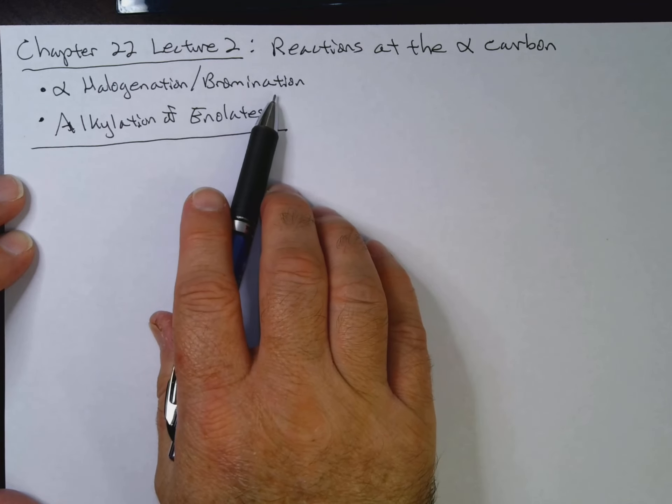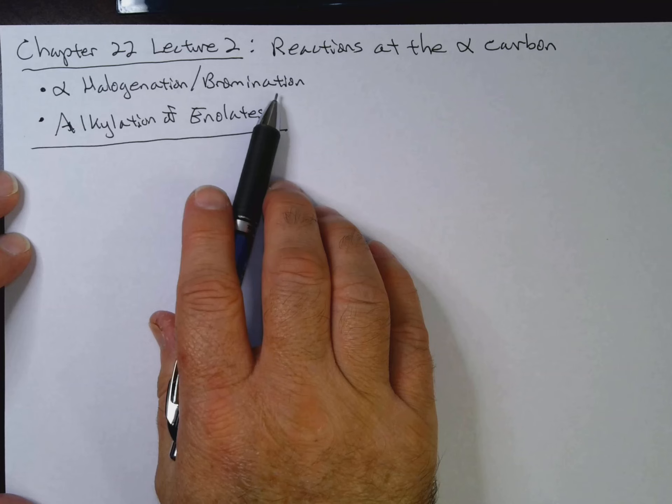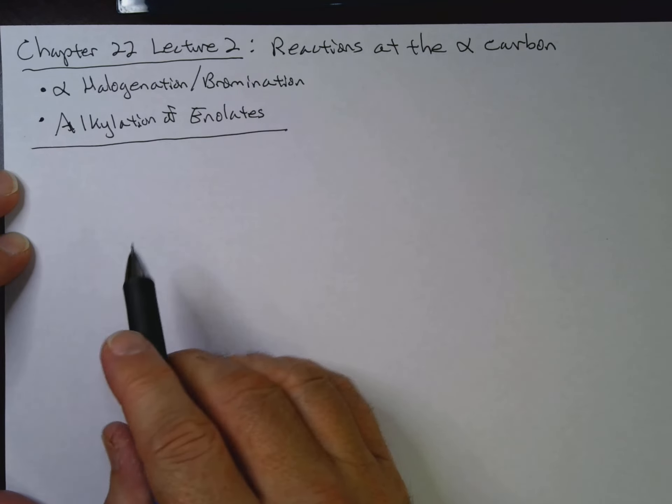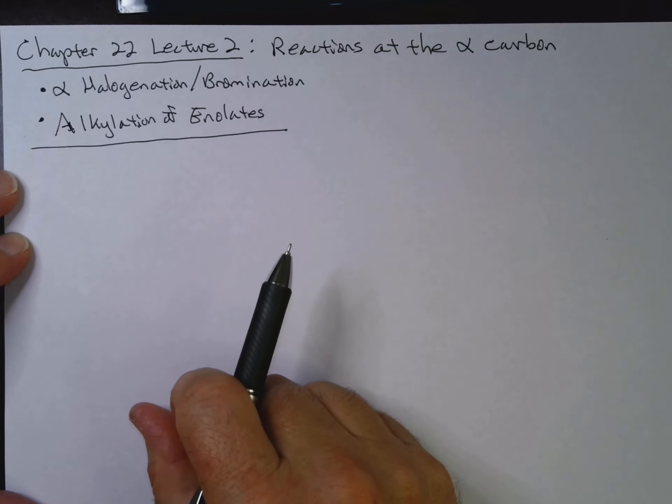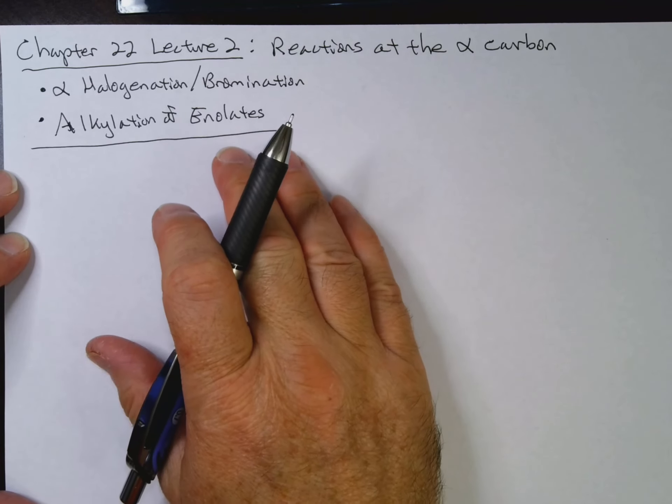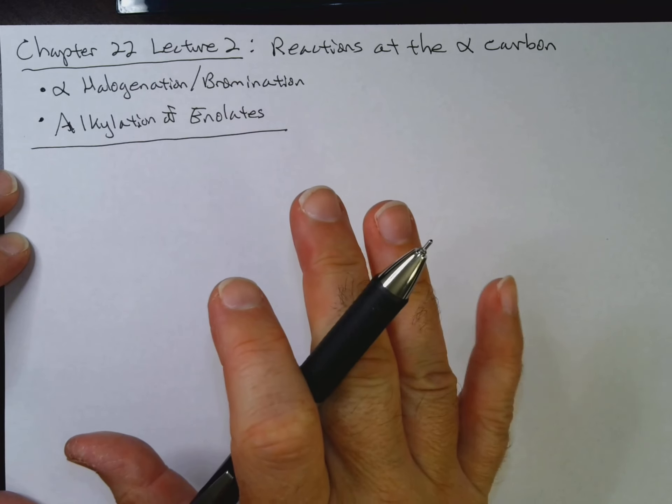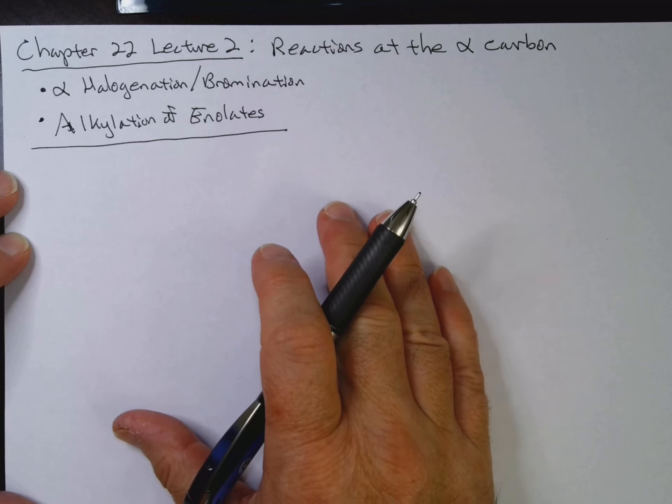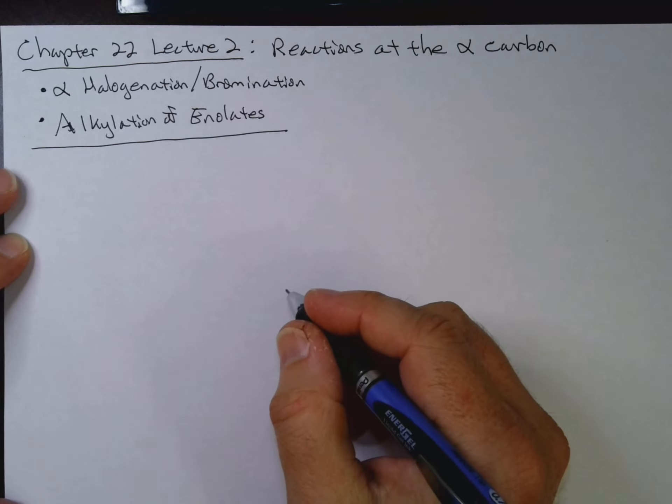Alpha bromination is actually, there's a way to do an alpha bromination involving carboxylic acids that we'll take a look at. And then we'll also look at alkylation of enolates, and that will lead us into a couple of synthetic techniques, the acetoacetic ester synthesis and the malonic ester synthesis.